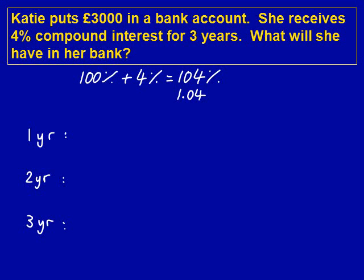We then must set up our answer. You can see this is a 3-year question, so we have 3 lines of working. 1 year, 2 year, and 3 year. We set it up like this so we remember what to do in the exam.